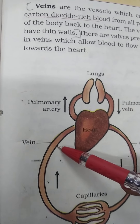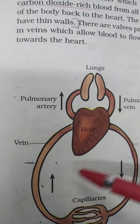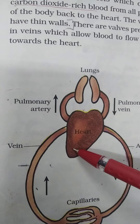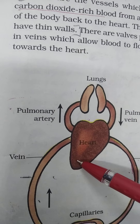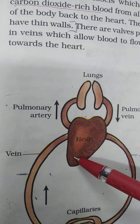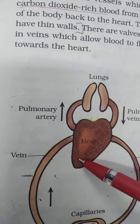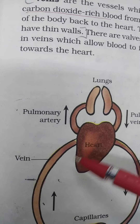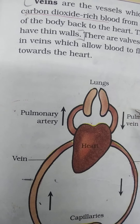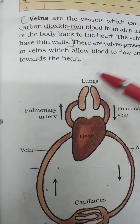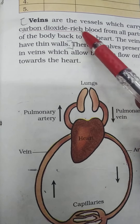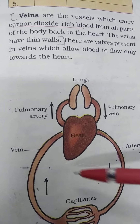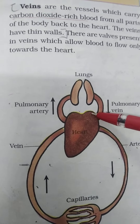Veins are tube-like blood vessels situated just under the skin. They can be easily seen as greenish-blue tubes on your hands and legs. Veins carry deoxygenated blood, or carbon dioxide-rich blood, from body parts to the heart.